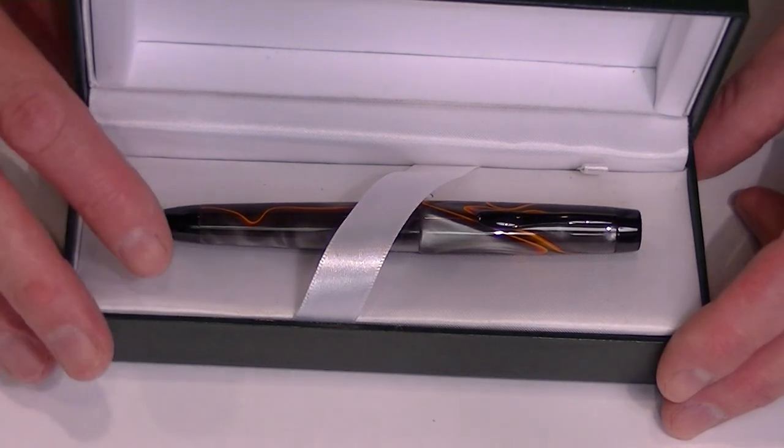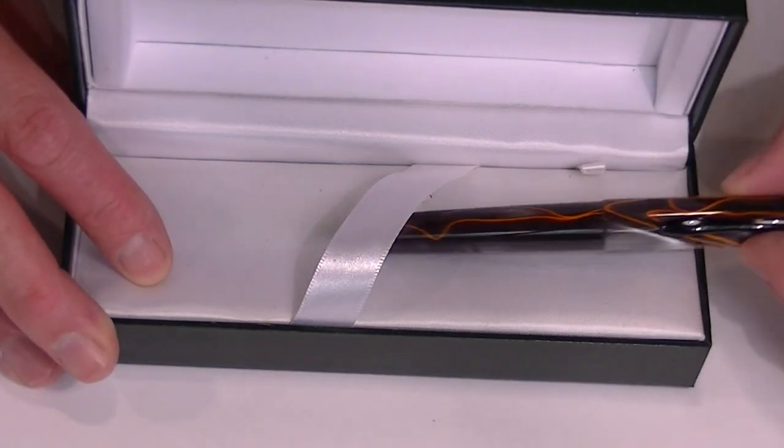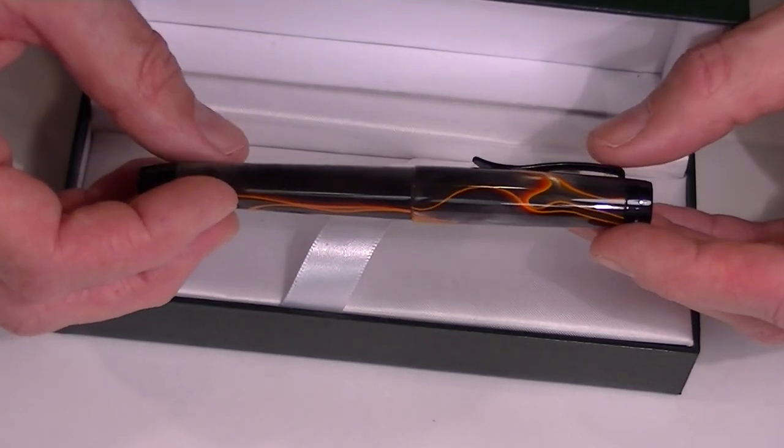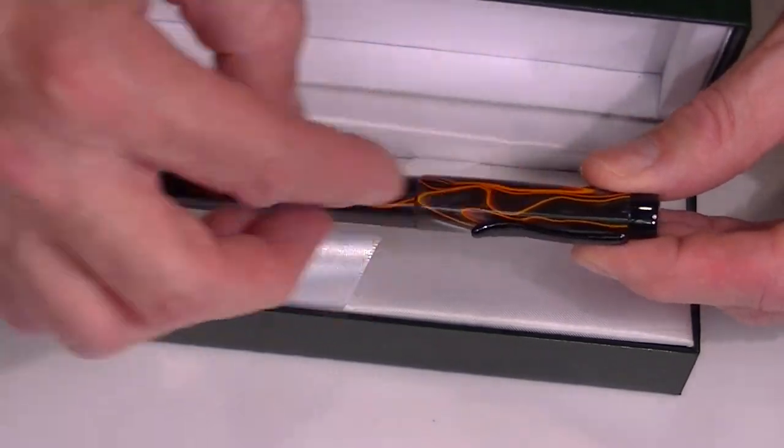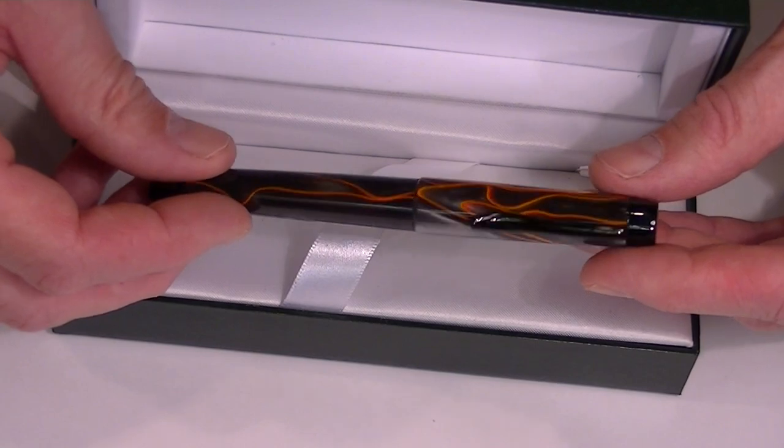Inside we have the pen, this particular one is the Volcano Grey. It's pretty cool. It's got great swirly colors to it with orange running through it, the resin pen.